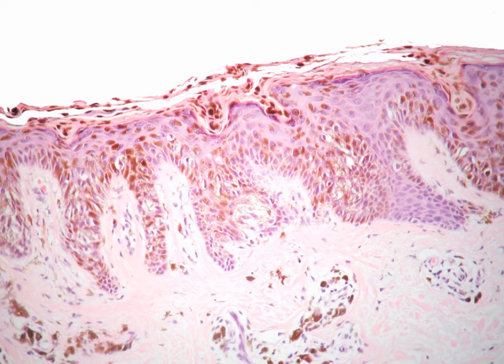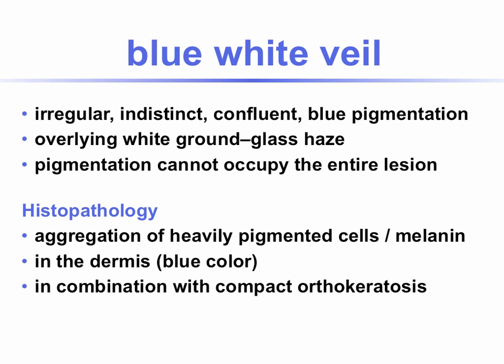Histopathologically, you see melanin pigment throughout the epidermis filling out the stratum corneum. Blue-white veil is an irregular, indistinct, confluent blue pigmentation overlying with a white ground-glass haze. This pigmentation does not occupy the entire lesion. Histopathologically, it corresponds to an aggregation of heavily pigmented cells or melanin in the dermis — this is why it has the blue color — in combination with compact orthokeratosis, which distinguishes it from blue nevi.